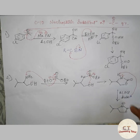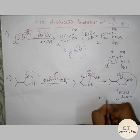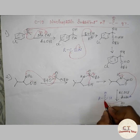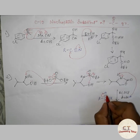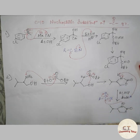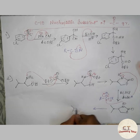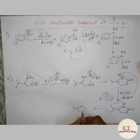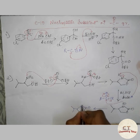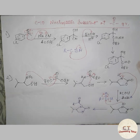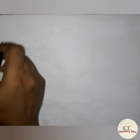Then this negative charge on nitrogen is going to attack the carbonyl group of RCOCl. The negative charge will go to the oxygen and come back, and since Cl⁻ is a good leaving group, it will leave. This gives us the final product of this reaction.